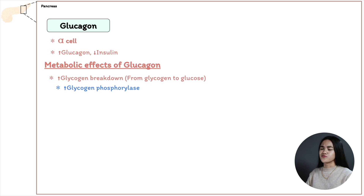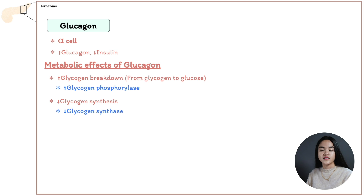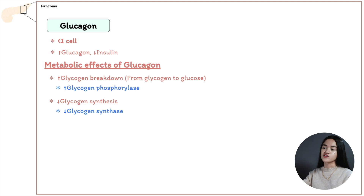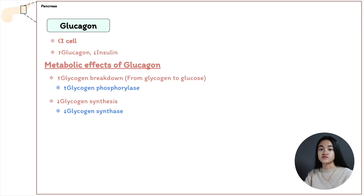If glucagon triggers glycogen breakdown, it also inhibits glycogen synthesis, because we don't need to store glucose. Glycogen synthase, the enzyme responsible for glycogen synthesis, is inhibited. This involves phosphorylation and dephosphorylation — attaching and removing phosphate groups — to activate and inactivate glycogen phosphorylase and glycogen synthase.